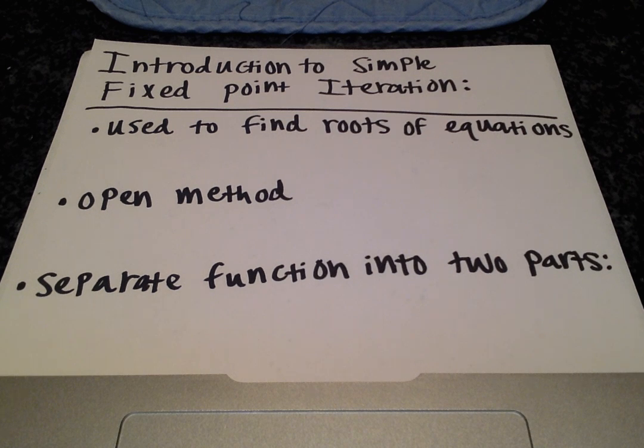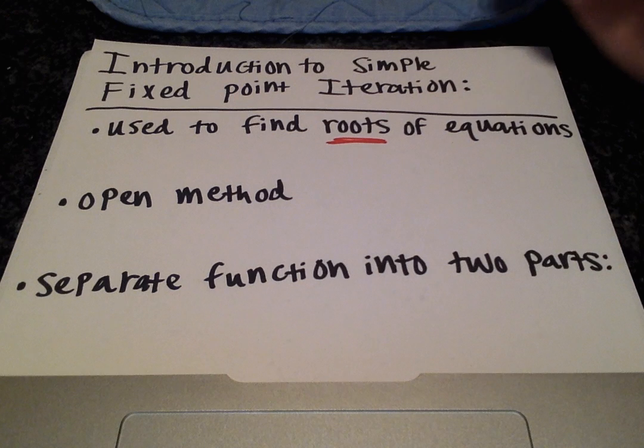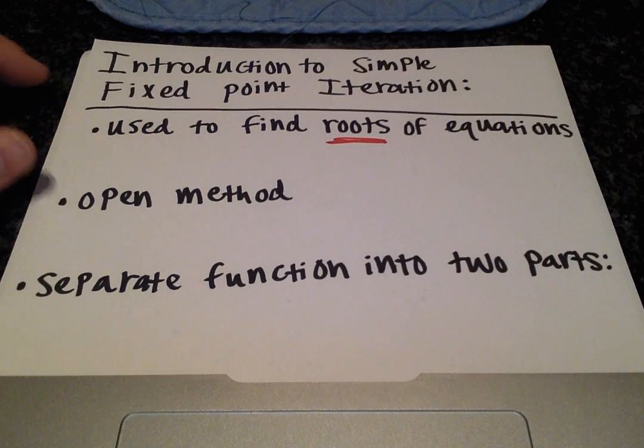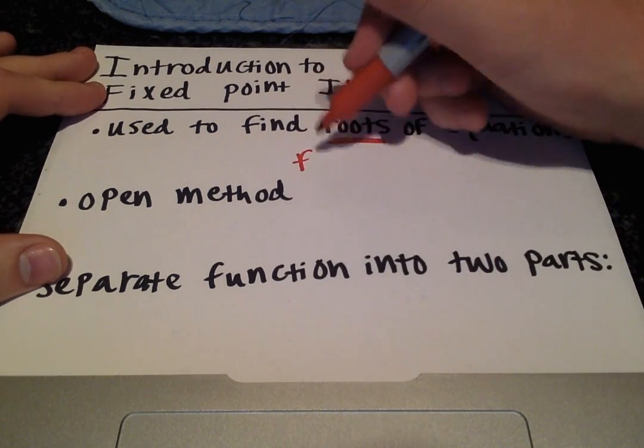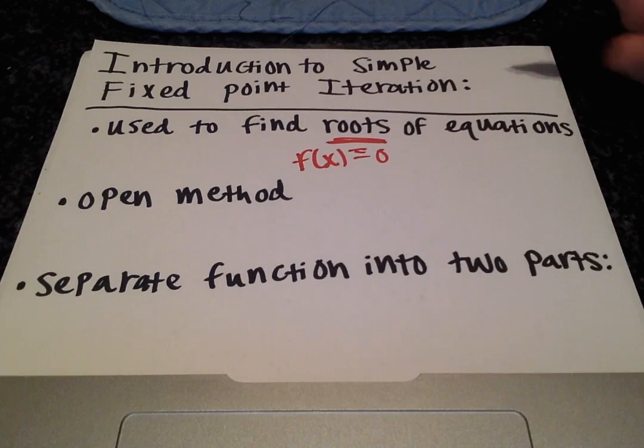Hello there, I'm going to introduce a numerical methods topic, the simple fixed point iteration. This is a method used to find the roots of equations. Roots are simply where the function crosses the x-axis, and at that point f(x) equals 0.